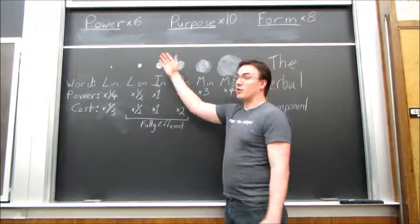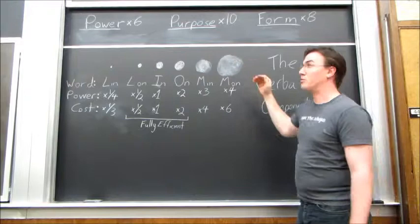The first, power, contains six syllables. The second, purpose, contains 10 syllables. And the last, form, contains eight syllables.